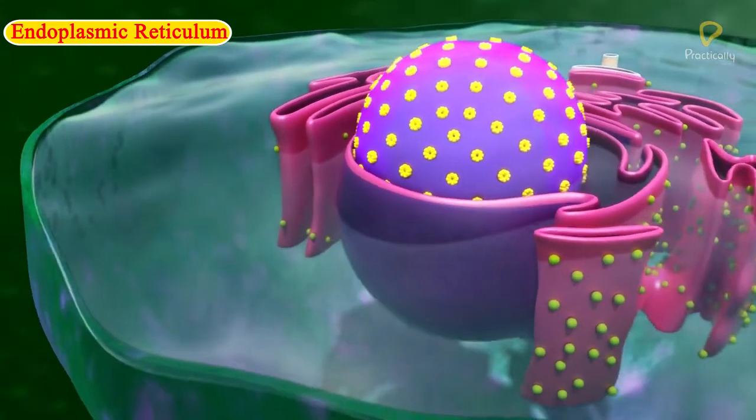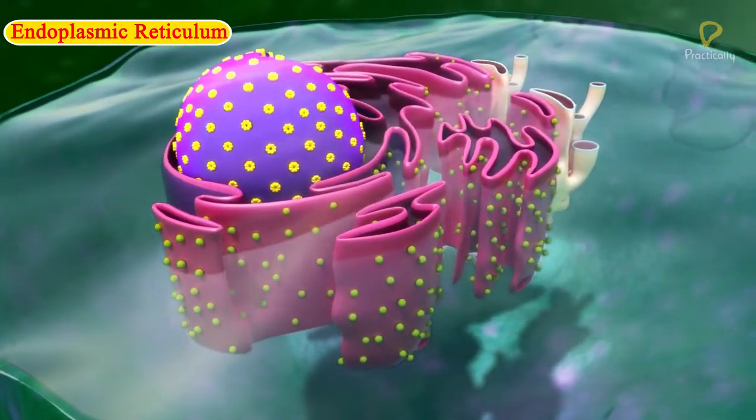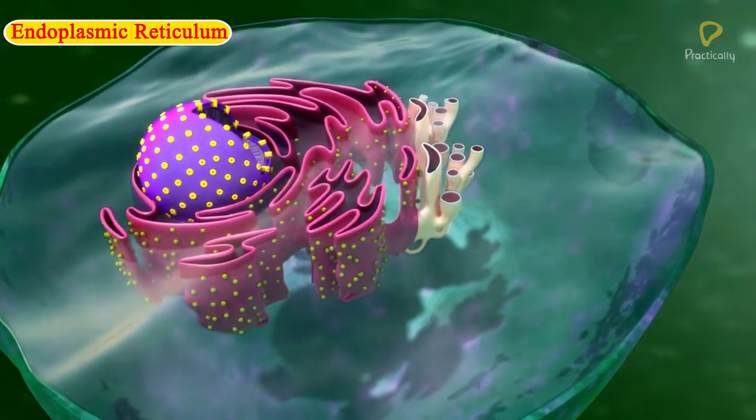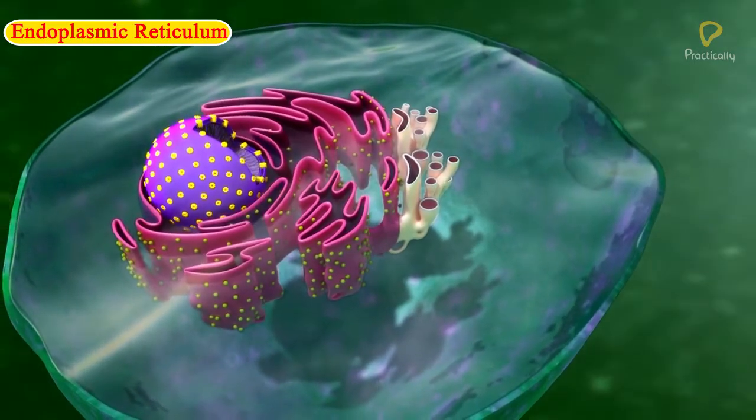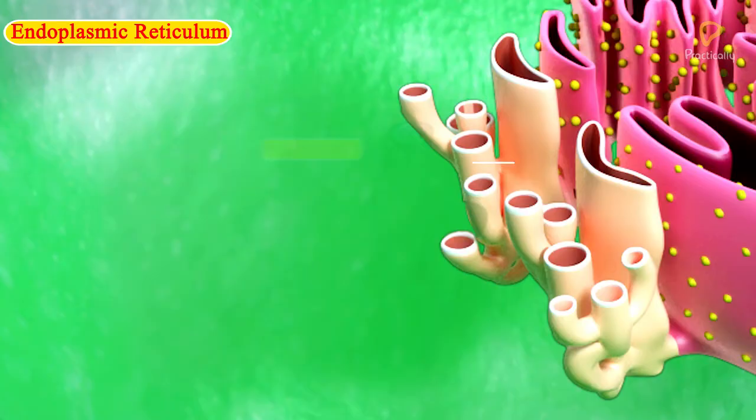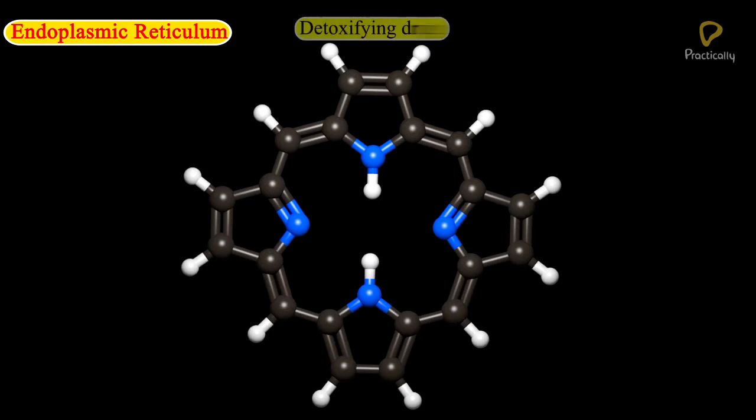The endoplasmic reticulum provides mechanical support to the colloidal cytoplasmic matrix of the cell. In the liver cells of vertebrates, smooth endoplasmic reticulum plays a crucial role in detoxifying many poisons and drugs.